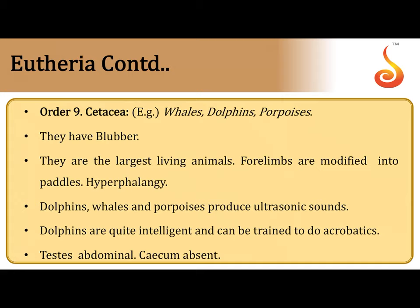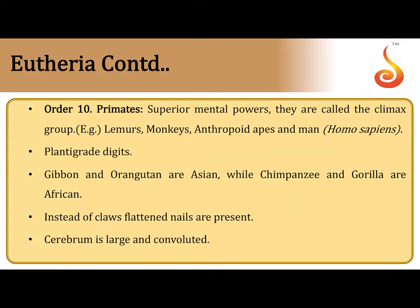Order Cetacea includes all whales, dolphins, and porpoises. They also have fat (blubber) under their skin and are the largest living mammals. Their paddle-like structures show hyperphalangy — more fingers and toes than usual. They produce ultrasonic sounds for navigation. Dolphins are intelligent and can be trained for acrobatics. Their testes are located within the abdomen, not the scrotum, and the cecum is absent in their large intestine.